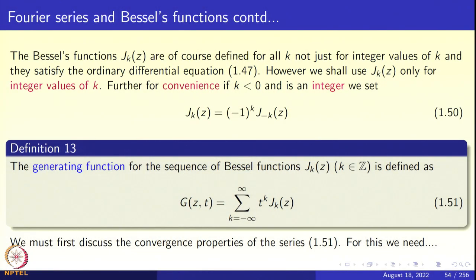We continue from where we left off last time. Recall that last time we introduced the Bessel's functions of the first kind, J_P(z), where P was real and non-negative. Now we are going to take P to be a non-negative integer, so we should use the symbol K. We define J_K(z) for non-negative integers K.